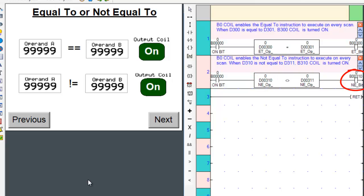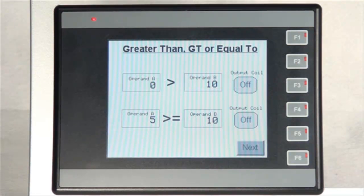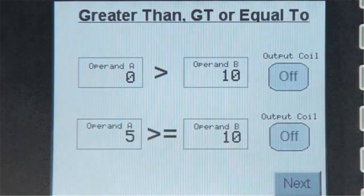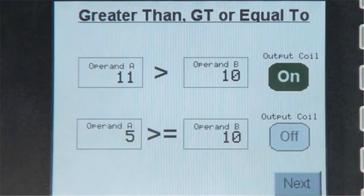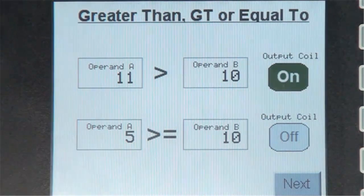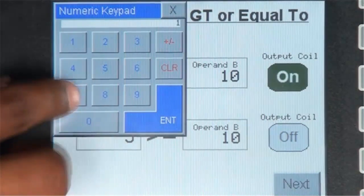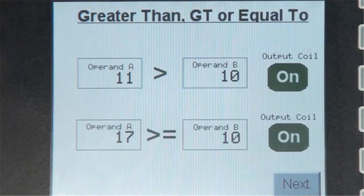Now let's go to the HMI and observe how the relational and equality operators work. On screen one, as soon as operand A is greater than operand B, the output coil is turned on. When operand A is greater than or equal to operand B, the output coil is turned on.